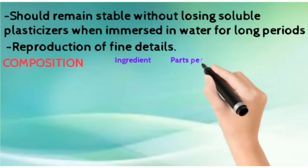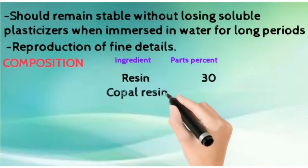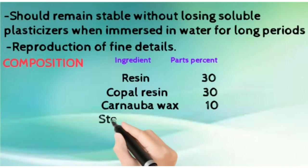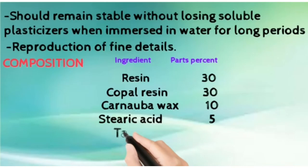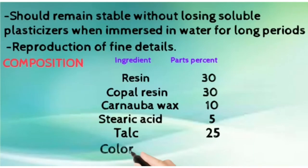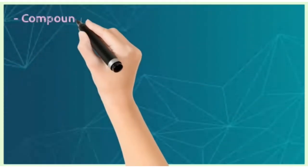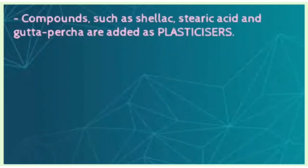The composition of impression compound includes resin, copal resin, carnauba wax, stearic acid, talc, and coloring agents. Compounds like shellac, stearic acid, and gutta-percha are added as plasticizers, while talc acts as a filler.